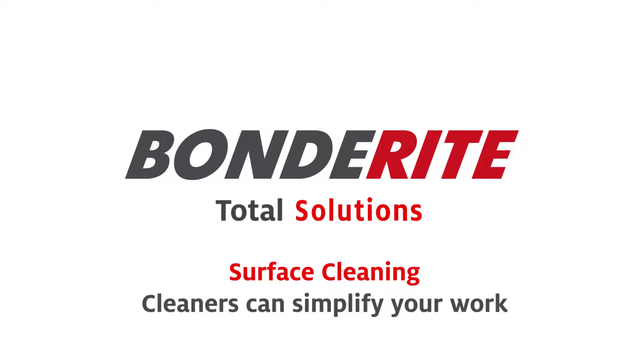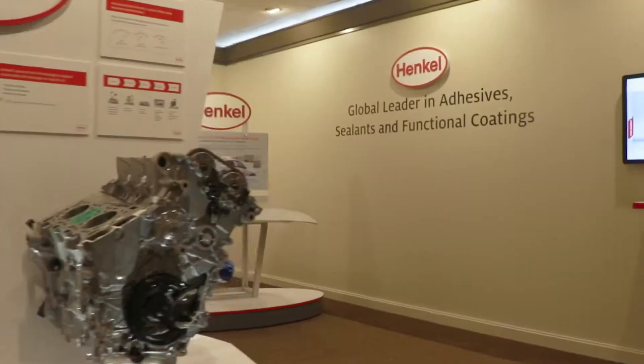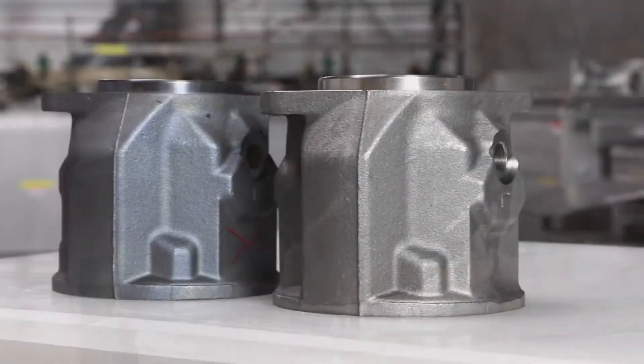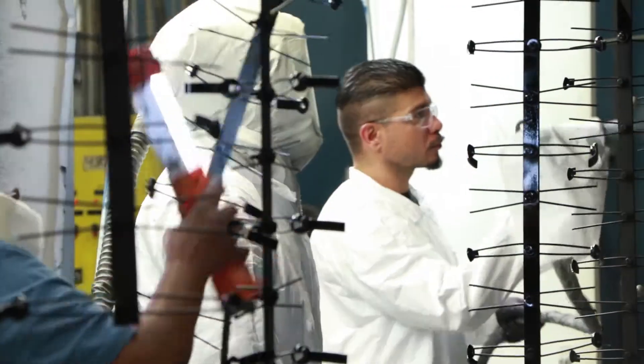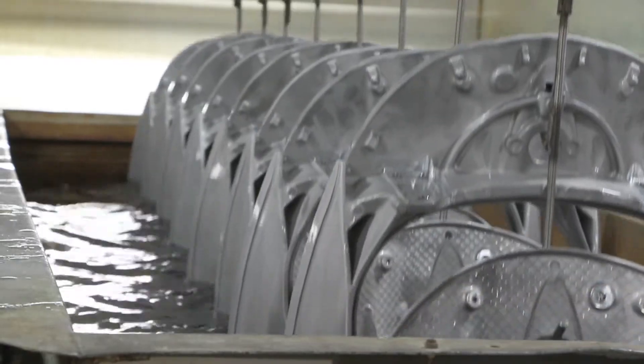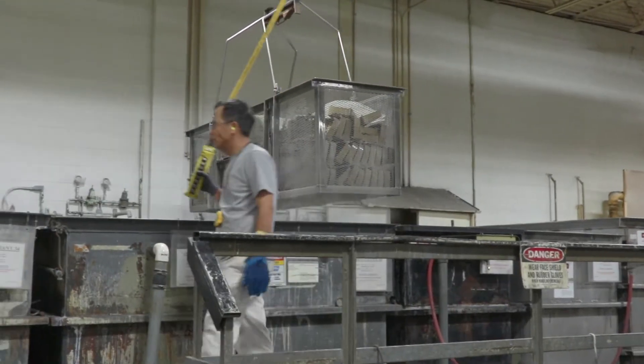The Bondurite brand product line is well established in the automotive and metalworking industries as a brand for conversion coating processes and chemistries to improve paint adhesion, corrosion protection and wear resistance to ferrous based alloys, mixed metal alloys and plastic surfaces.